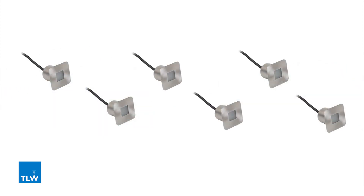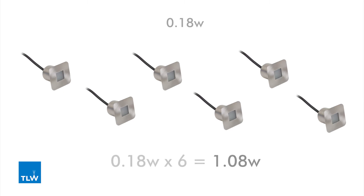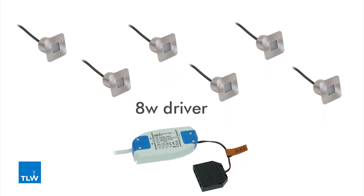Here's another example. Imagine you're going to install a run of plinth lights and you need 6 in total for the space you are lighting. The light you have selected is 0.18 watts. The calculation that you would need to work out is 0.18 watts times 6 equals 1.08 watts. Therefore you could select an 8 watt driver or higher.